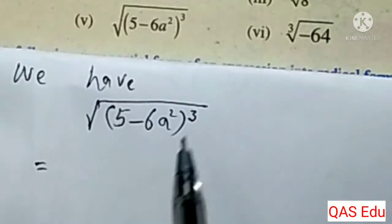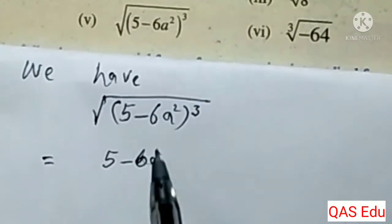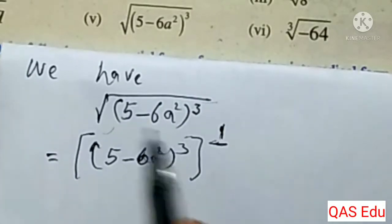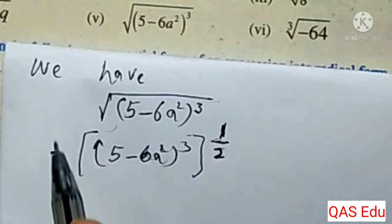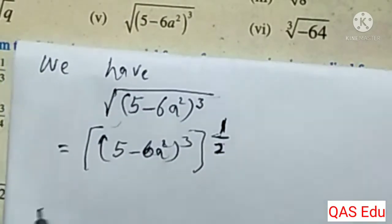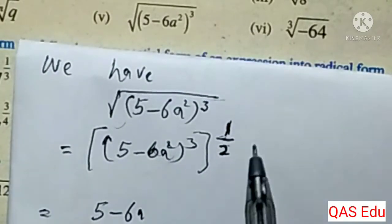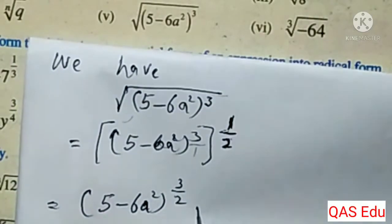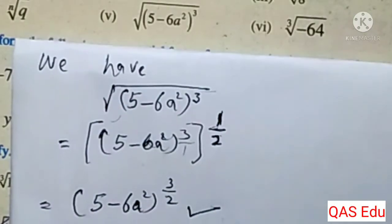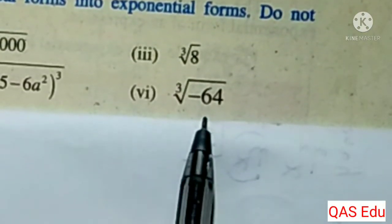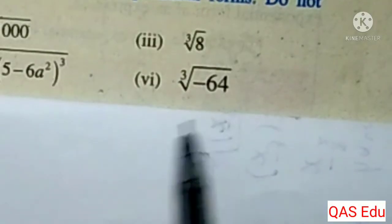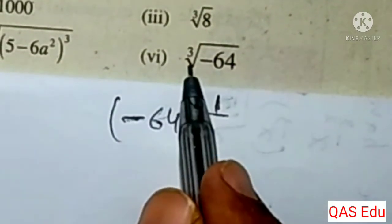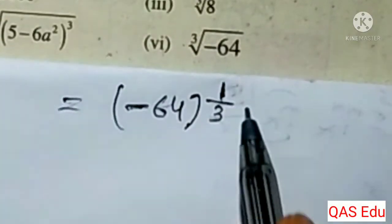For the expression 5 minus 6a squared, whole power 3: the radicand is identified, and the root index is applied. The exponential form is written as the whole raised to power 3, then power 1 over 2, giving 3 over 2. For minus 64 with root index 3, the exponential form is determined.